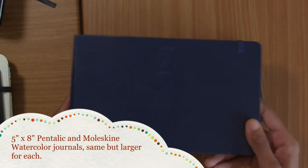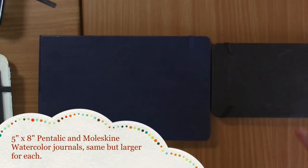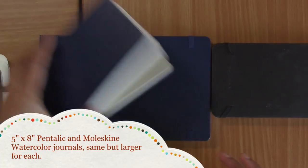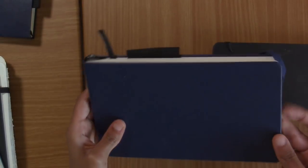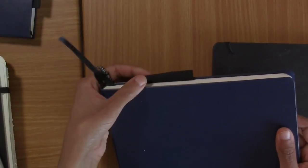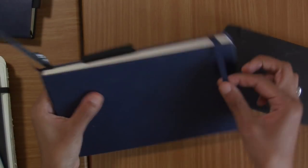So I also have 5x8 journals as well. Just like I have a small Pentalic, I've got a 5x8 larger Pentalic. It's a bigger replica of the smaller one, including the bookmark ribbon, the pencil or brush holder, and the strap to close it, and also a pocket in the back for sketches. Again, the paper feels super thick. It feels like Arches paper.